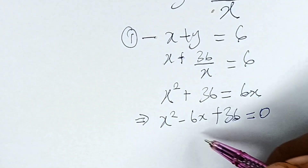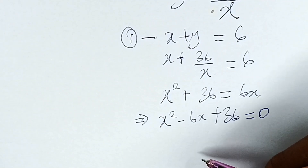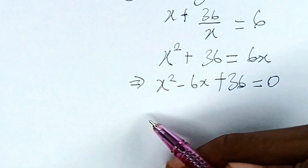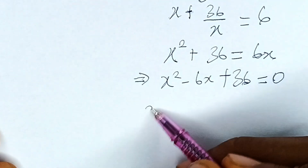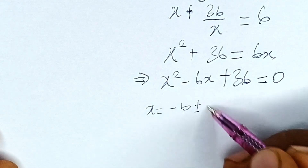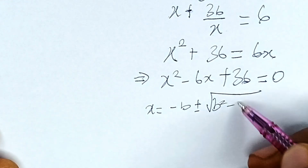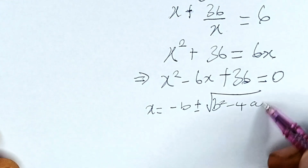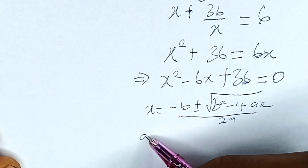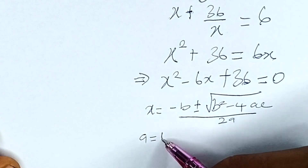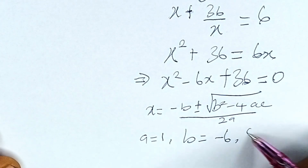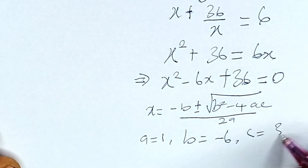From here, we can use the quadratic formula to solve. The quadratic formula states that x is equal to minus b plus or minus square root of b squared minus 4ac, all over 2a. Our a is 1, b is equal to minus 6, and c is equal to 36.